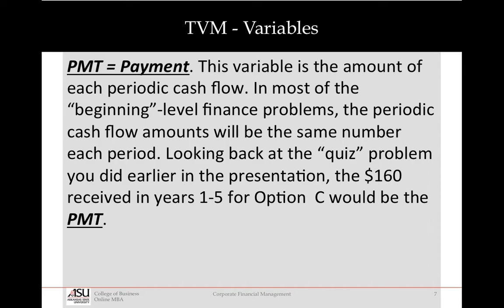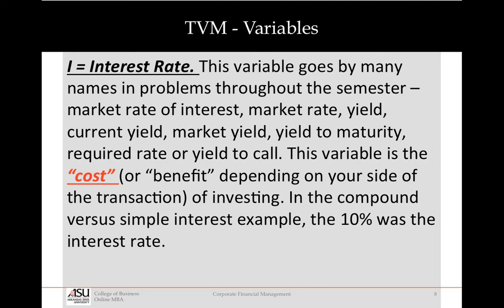If you look back at that quiz we did, the $106 received in years one through five for option C would be payment. The MBA class will actually change this up — we'll have different periodic payments and we'll have to figure out how to work those. But that's really what we're looking at: a series of periodic payments, periodic receipts of funds.